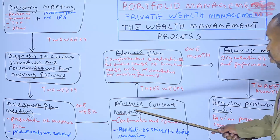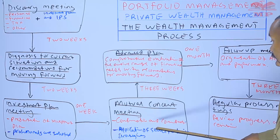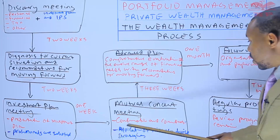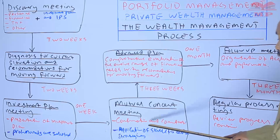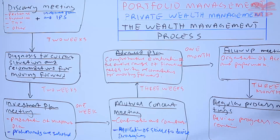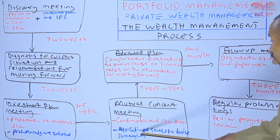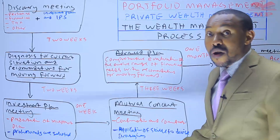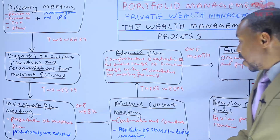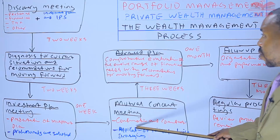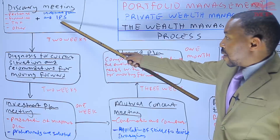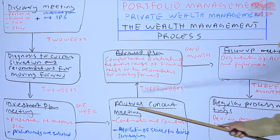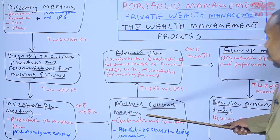At the mutual consent meeting, confirmation and consent are agreed upon. There will be exchanging of papers, signatures, and providing of information needed at this step. Application of skills to devise strategies — either active management strategies, passive management strategies, or semi-active strategies — are selected in line with the IPS from the first step. This step is very crucial, and the time between the investment plan formulation meeting and the mutual consent meeting should be about one week.